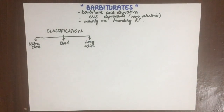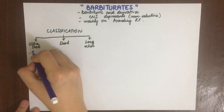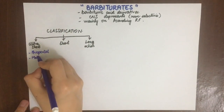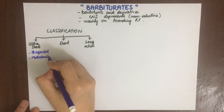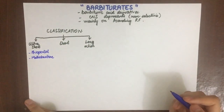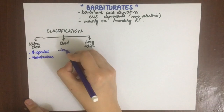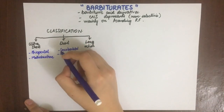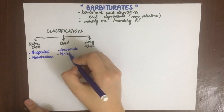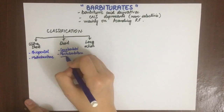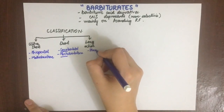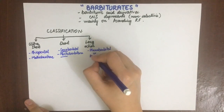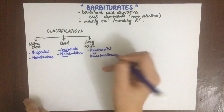Ultra-short-acting barbiturates include thiopental and methohexitone. Short-acting includes secobarbital and pentobarbitone — remember 'seco and pento.' Long-acting is phenobarbital, also known as phenobarbitone.